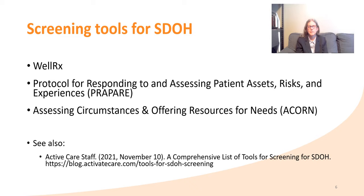Now we turn the discussion to various screening tools for Social Determinants of Health. The WellRx survey was created for family practice and covers such topics as food insecurity, access to housing, affordability of utilities, transportation, employment, education, and safety. The PROPER was created out of a need for a national standardized screening tool for Social Determinants of Health. The PROPER covers similar questions to the WellRx, as well as social emotional health, being insured or uninsured, clothing needs, and income. Now we turn to the ACORN screening tool.